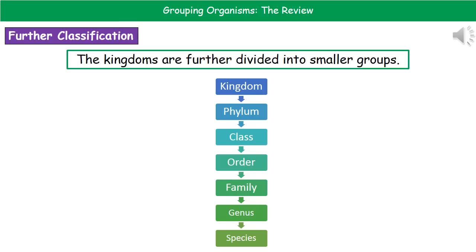Even when split into kingdoms, there's still a massive range of organisms within any given kingdom, so we further divide them into smaller groups. The sequence shown in the flowchart goes from the largest at the top — the kingdom — down through phylum, class, order, family, genus, and finally species at the bottom, where we're left with just one type of organism. You need to remember these divisions, so a mnemonic to recall the correct sequence is suggested.